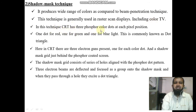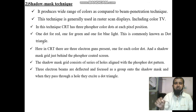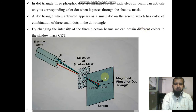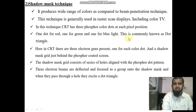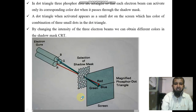In this technique, the CRT has three possible color dots at each pixel position — red, green, and blue. This arrangement is commonly known as a dot triangle.